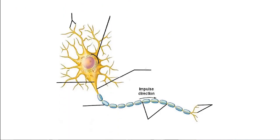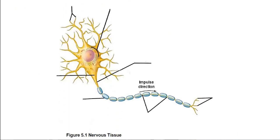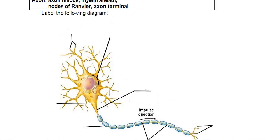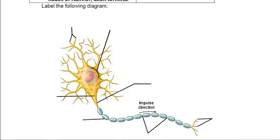Our first diagram that we need to fill out is a generic neuron. We have different parts of the neuron cell, and we need to label what they are. We're going to start here with this label — the cell body, which contains the Nissl bodies.